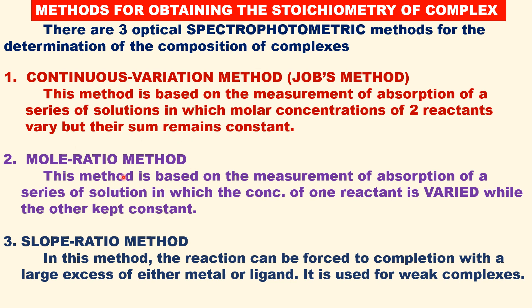In the mole ratio method, it is similar to this, but one of the concentrations is fixed while the other is varied. For example, the metal concentration can be fixed — for example, one mole — and we vary the ligand concentration and measure the absorbance. So this method is based on the measurement of absorbance of a series of solutions in which the concentration of metal is fixed and the ligand is varied.